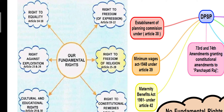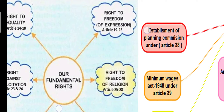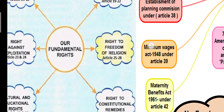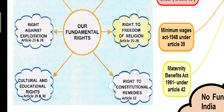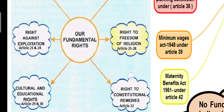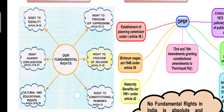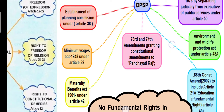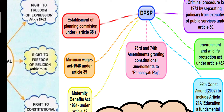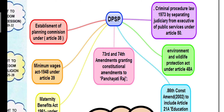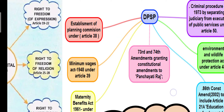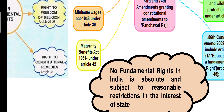Our fundamental rights include: Articles 14–18 — Right to Equality; Articles 19–22 — Right to Freedom of Expression; Articles 25–28 — Freedom of Religion (since India is a secular nation); Article 32 — Constitutional Remedies; Articles 29–30 — Cultural and Educational Rights; Articles 23–24 — Right Against Exploitation. State directive principles include: establishment of a Planning Commission, minimum wage acts, maternity benefits act, environment and wildlife-related laws, and criminal procedure code.